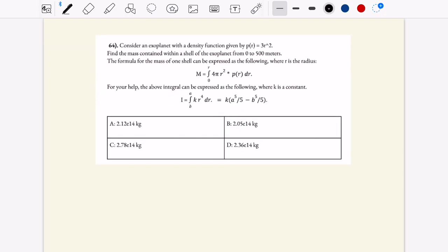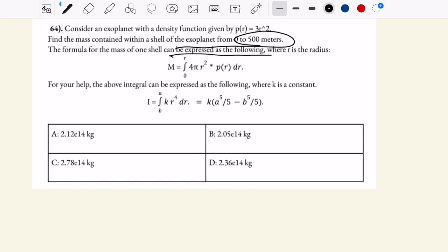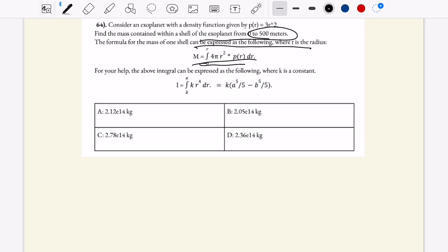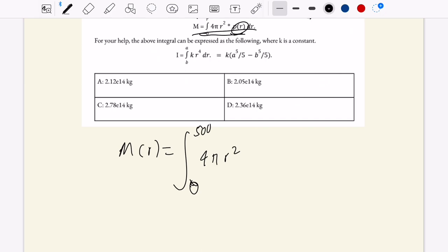So final question of the day. We have an exoplanet with the density function given by that. We want the mass contained within a shell of the exoplanet. The formula for the mass of one shell can be expressed as the following. And then it tells you how to integrate, what this integral is basically equal to. So I think we're basically just plugging this into an integral. So then m of r is equal to the integral, 0 to 500 meters, of 4 pi r squared times p of r. p of r here is 3 r squared dr. And I think that's it, essentially.